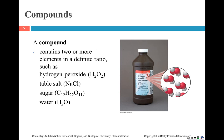A compound contains two or more elements in a definite ratio. For example, hydrogen peroxide is H2O2, whereas water is H2O. Whenever you have water, it's always two atoms of hydrogen and one of oxygen. It's interesting that water and H2O2 are very different chemicals, but one only has one more oxygen than the other — and it makes a big difference.